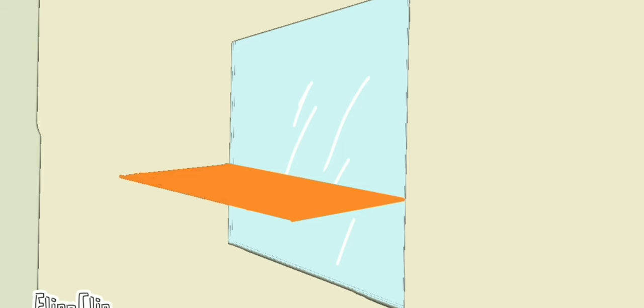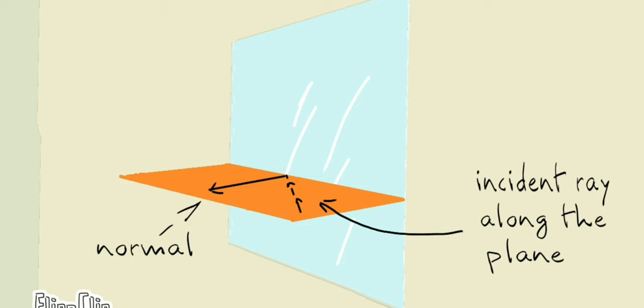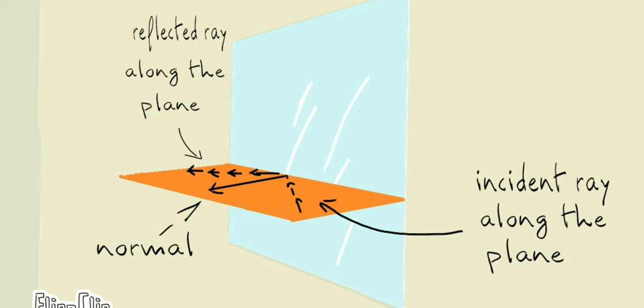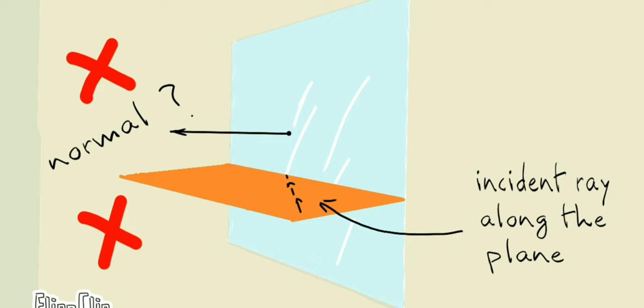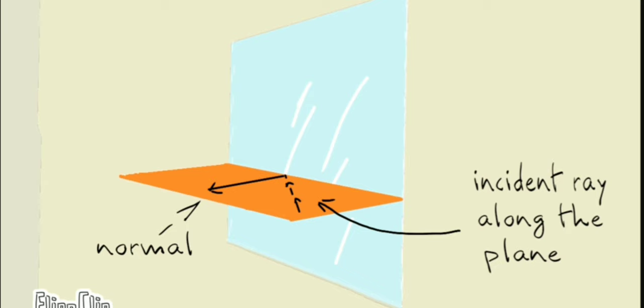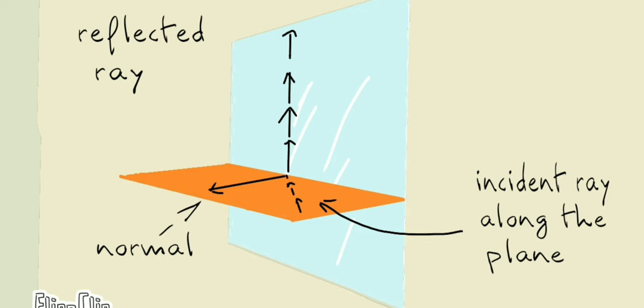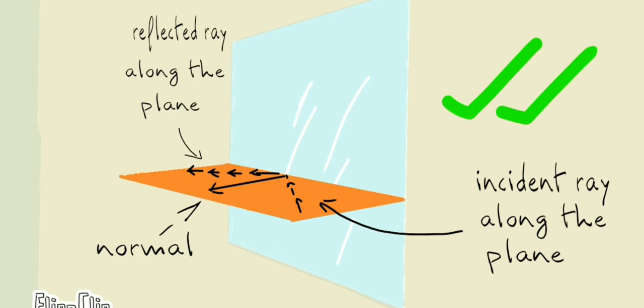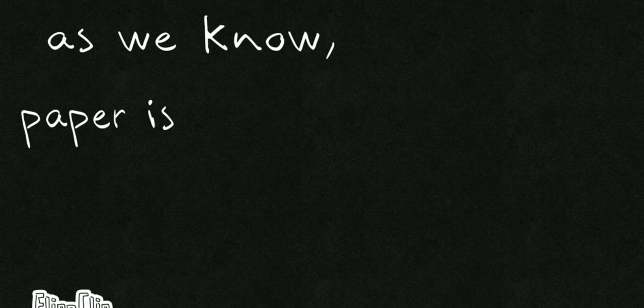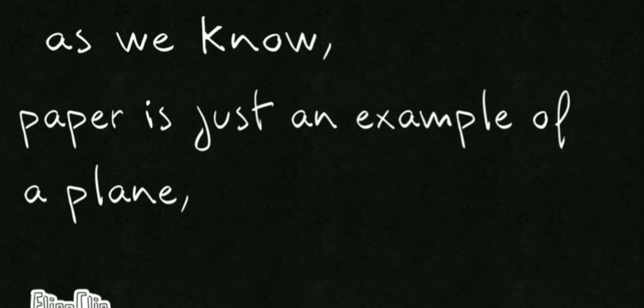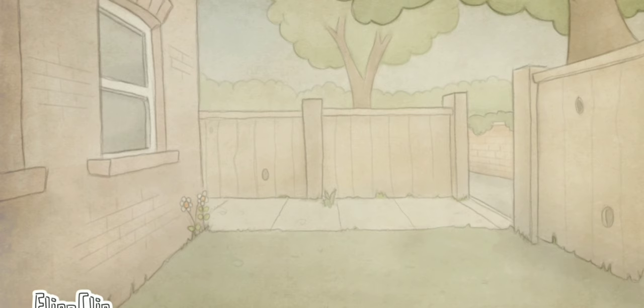Let me explain what 'plane' means with an example. Think of a piece of paper — a kagoj. Imagine a mirror and a piece of paper. If the incident ray travels along the surface of the paper, the normal drawn at the point of incidence must also be on the paper, and the reflected ray must also stay on the paper. It would be wrong if the incident ray is on the paper but the normal is drawn above or below it. All three — incident ray, normal, and reflected ray — must lie in the same plane. This is the second law of reflection.